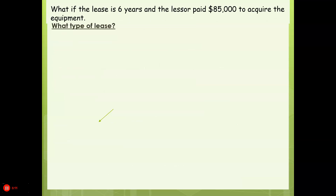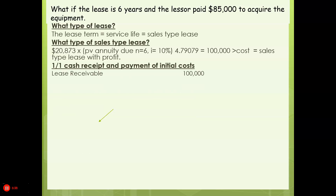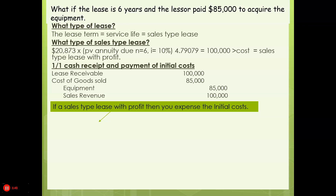Scenario 3: the lease is six years and the lessor paid $85,000 to acquire the equipment. The lease term and service life are the same, so it's a sales-type lease. The net present value of the payments is $100,000, which is greater than the $85,000 cost, so this is a sales-type lease with profit. We book the lease receivable, remove the equipment from the books, record cost of goods sold, book sales revenue, and expense the initial direct costs as a selling expense.